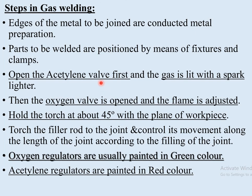Now we can look at the different steps in gas welding. As in arc welding, we begin with metal preparation — the parts are filed or shaped into the required dimensions. Then the parts are positioned or held together by means of jigs, fixtures, or clamps.